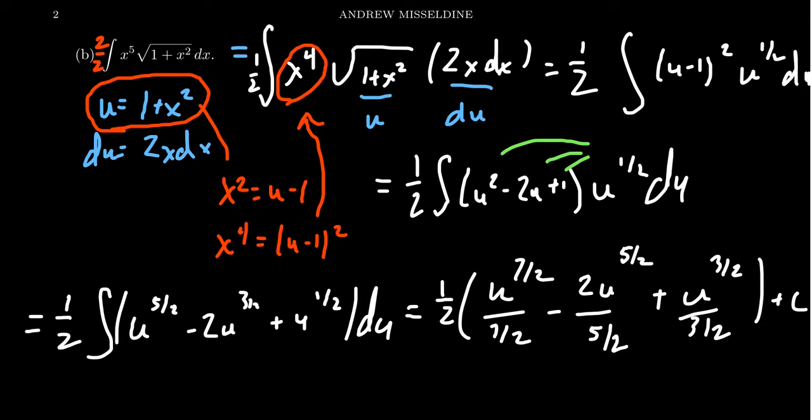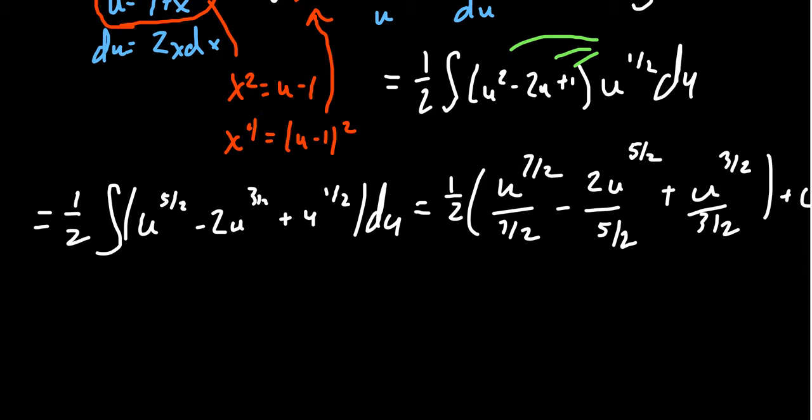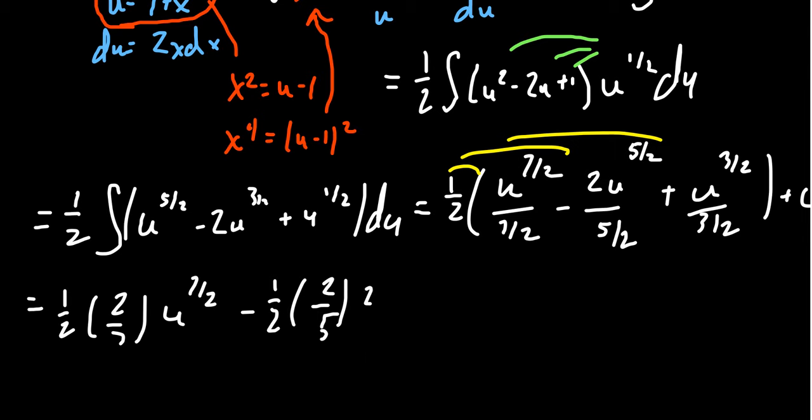And every time you divide by that fraction, you really could have multiplied by a reciprocal. And here, I'm also going to distribute the one half through on all of these things. So we're going to end up with 1/2 times 2/7, times u^(7/2). Then we're going to get -1/2 times 2/5. And then there's another, of course, 2u^(5/2). And then lastly, we're going to get plus 1/2 times 2/3 times u^(3/2) plus a constant right here.